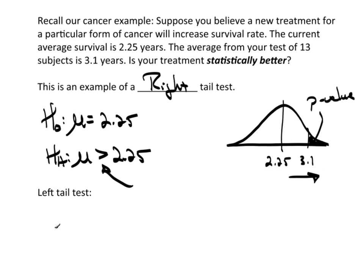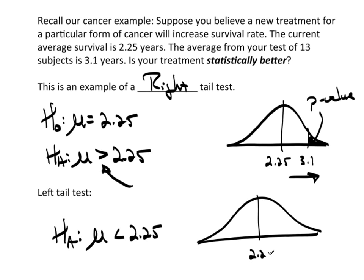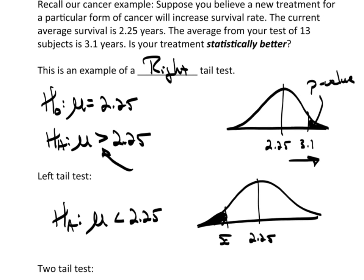A left-tailed test would have an alternative hypothesis that says the mean is less than 2.25. In that case, we would have 2.25, our mean. And over here, someplace, x-bar, wherever it is, would be to the left. And we're looking for that probability off to the left.